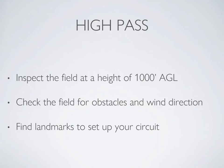Your high pass is a field inspection at a higher altitude, typically around 1,000 feet AGL. This is when you start looking for obstacles, noting the wind direction, and using that to help guide your approach setup. You can also look for landmarks to help set up a nice square circuit.